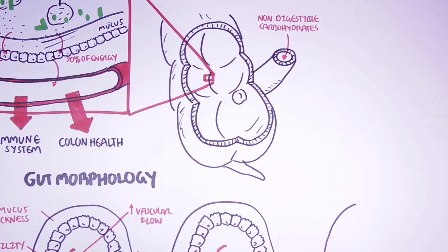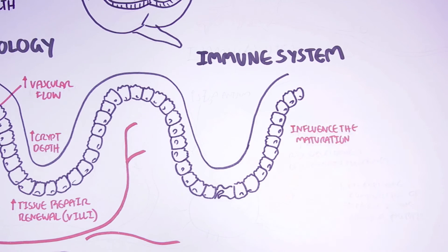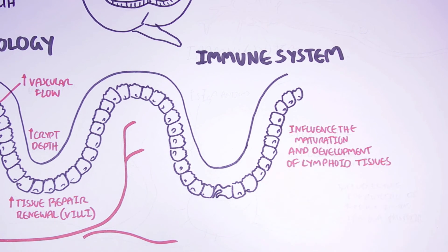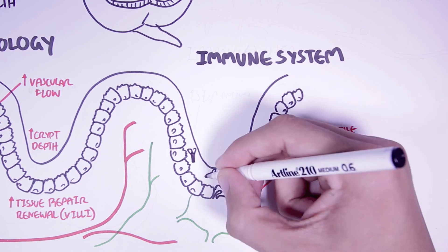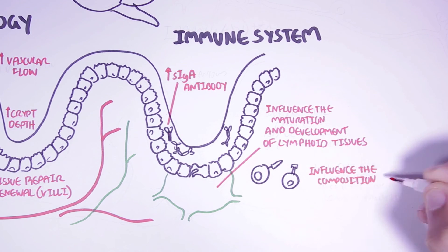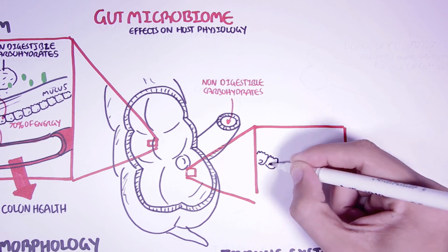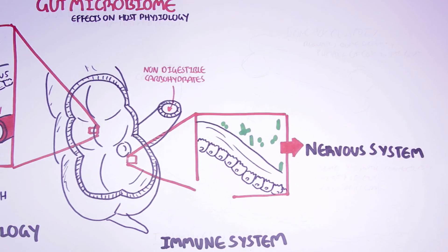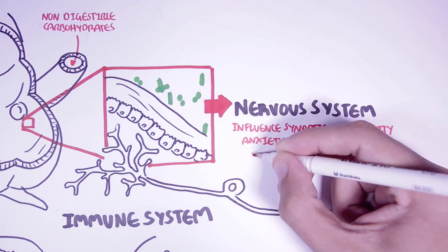The gut microbiota has also shown to have effects on the immune system. For example, it has shown to influence the maturation and development of lymphoid tissues, such as Peyer's patches in the mucosal system, as well as the lymph nodes. The gut microbes are also able to regulate the production of some immune mediators, including increasing the concentration of secretory IgA antibodies. Recently, it has been found that the bacteria are able to influence the composition of T cells in the lamina propria. The gut microbiome also has effects on the nervous system, including decreasing synaptic connectivity and promoting anxiety-like behaviors, as well as pain perception, based mainly on animal studies.